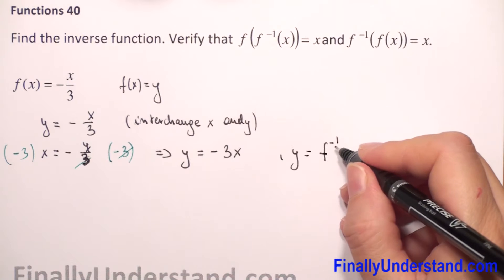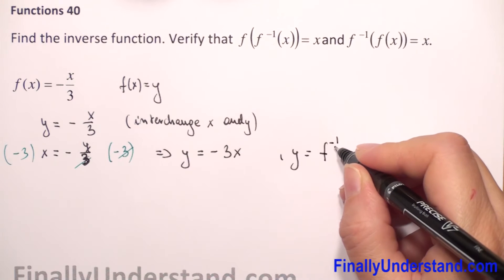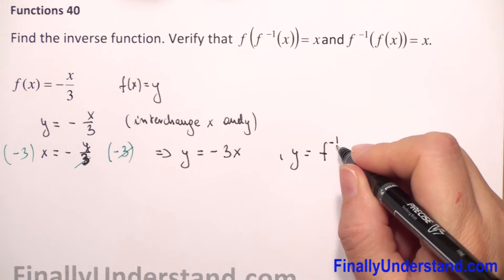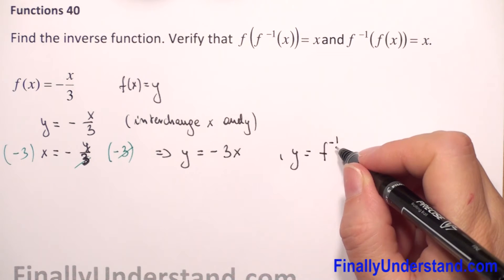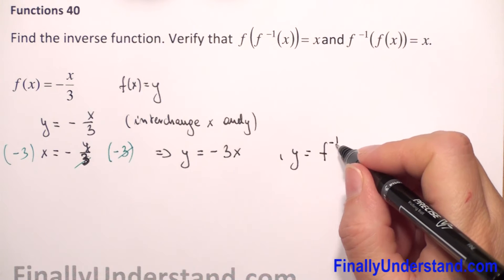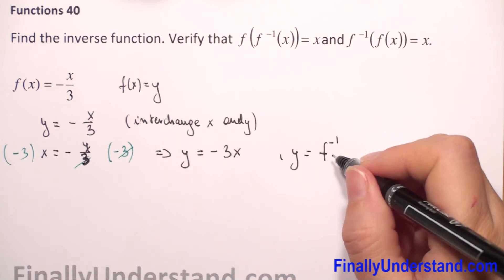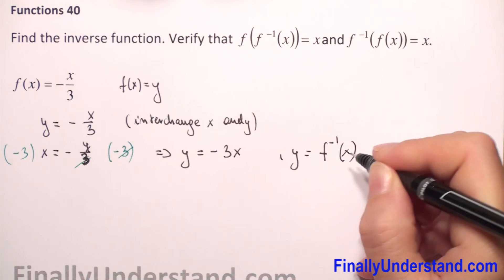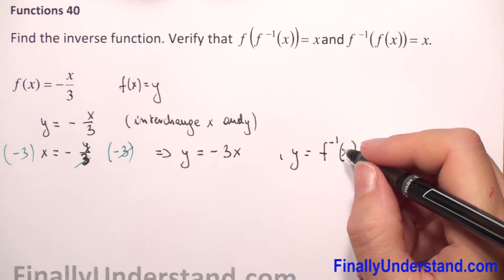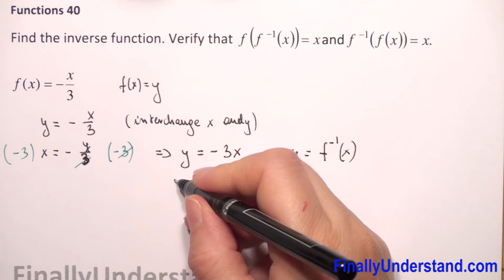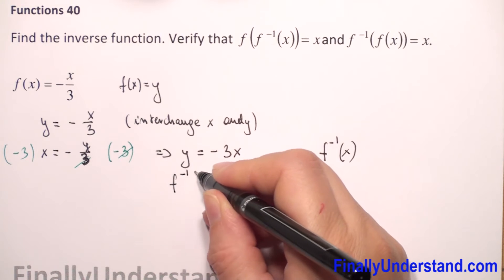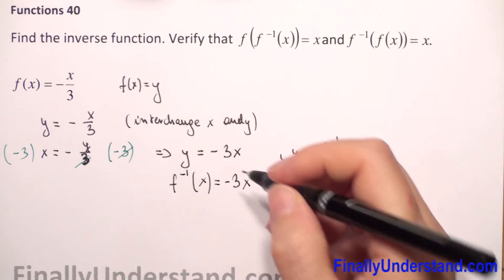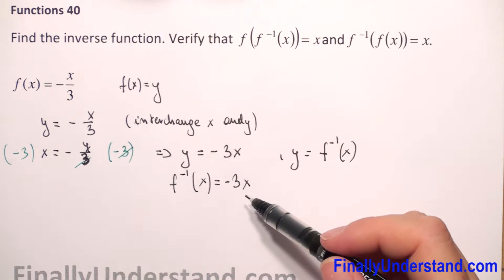Next, we will replace y by f-inverse. We write f to the negative 1, but this is not a negative exponent — this is just the notation f to the negative 1, meaning the inverse of function f. So the inverse of function f is negative 3x. We have found the inverse of function f.